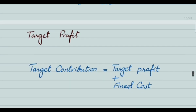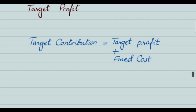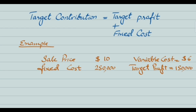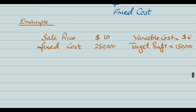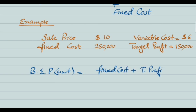Next is the concept of target profit. If the question states that the businessman wants a specific amount of profit, that is called target profit. When a target profit is given, the target contribution is the sum of target profit plus fixed cost. The formula becomes: fixed cost plus target profit, divided by contribution per unit.